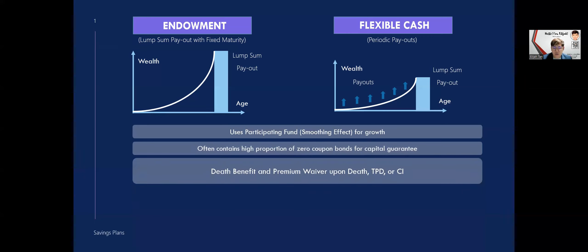The third point here is that you can choose to add premium waivers. For all these policies, you can even choose to add on some sort of assurance — not really insurance anymore, because nowadays plans have changed and the insurance portion has been removed. But it provides assurance in a sense that, for example, if you have placed in a thousand dollars and upon accidental death or death itself, you can get 105% of what you have put in. And also if you are contracted with critical illness, then you have the full policy premiums waived.